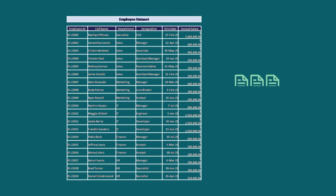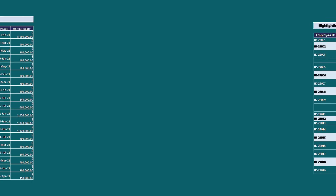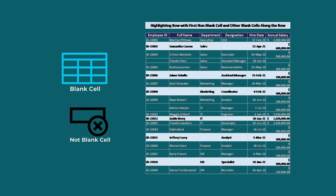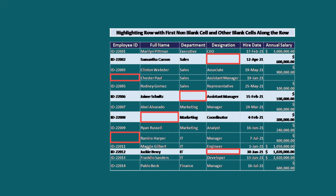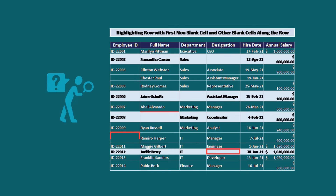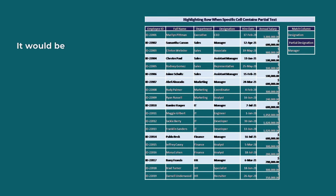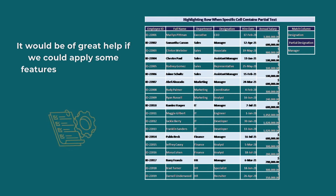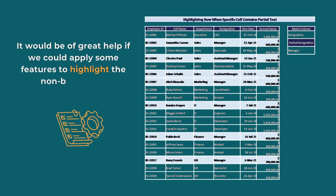Sometimes, when working with large datasets, you may find blank and non-blank cells are present randomly and simultaneously. In these cases, we need to find those cells to check the missing data and make the dataset uniform. It would be of great help if we could apply some features to highlight the non-blank cells automatically.